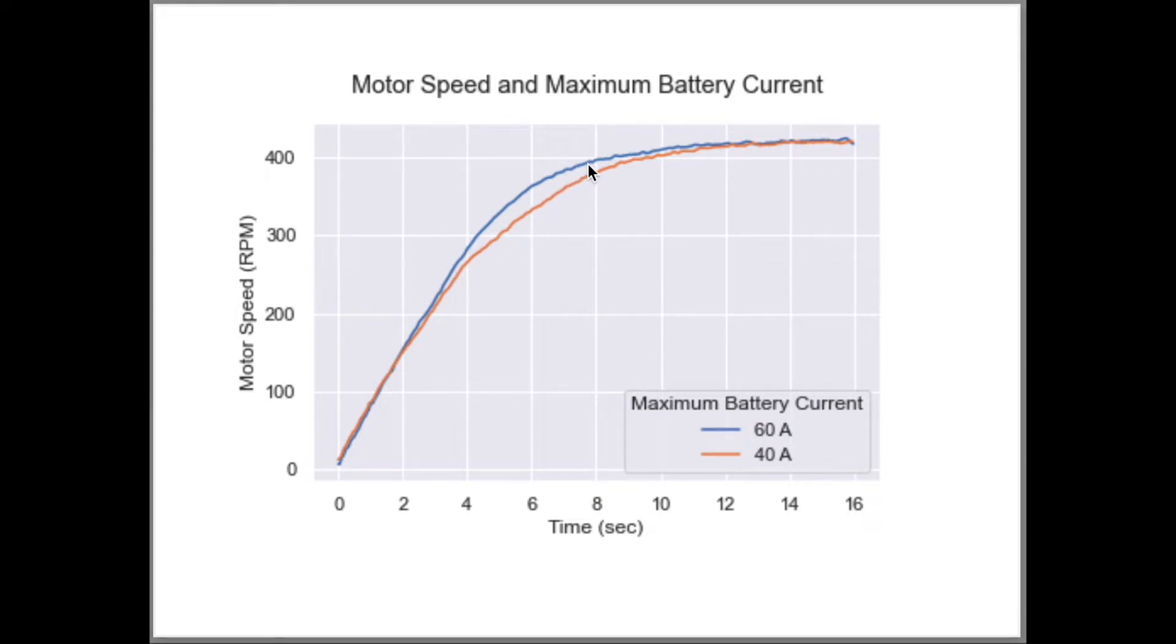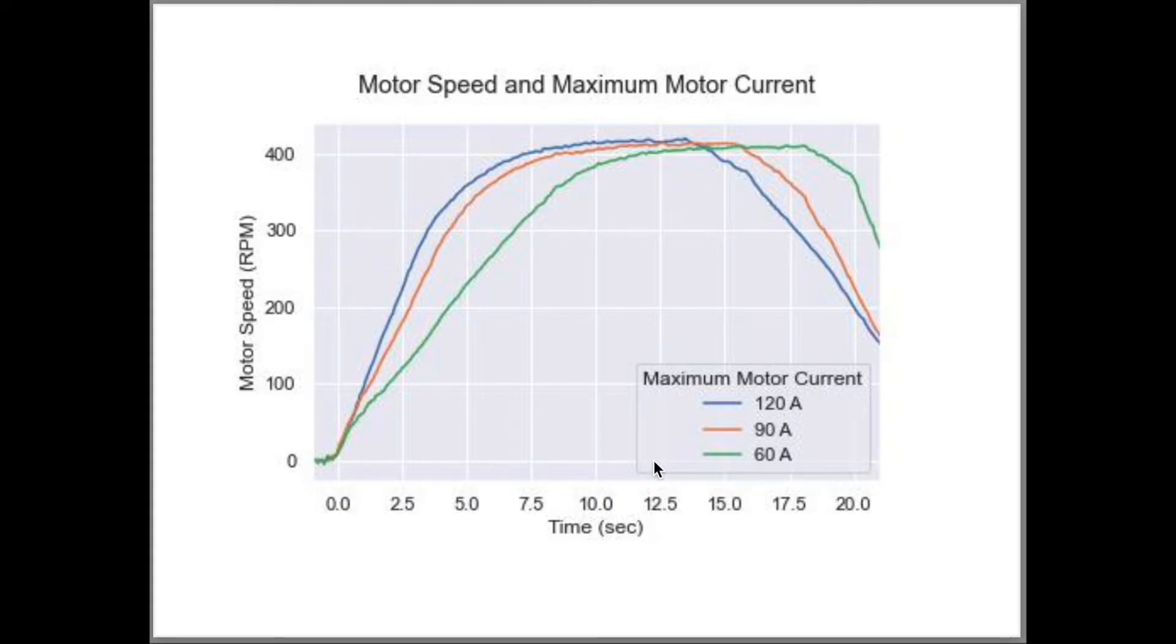Let's contrast this with the wheel speed that we saw in a previous video, where we kept the battery current at 100 amps and varied the motor current between 60, 90, and 120 amps.